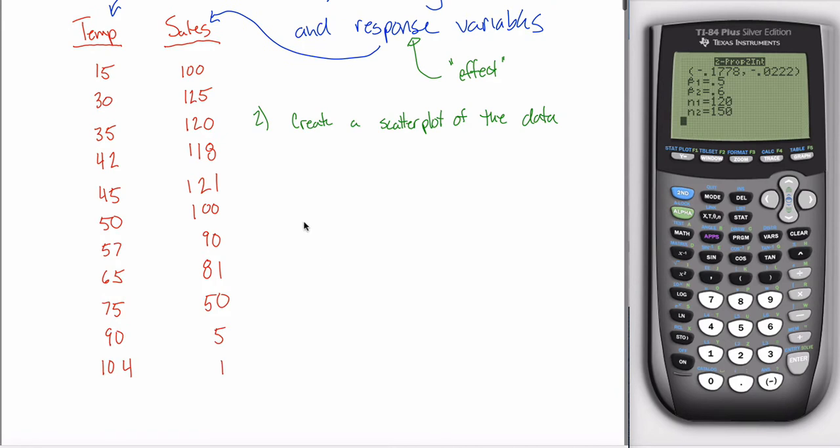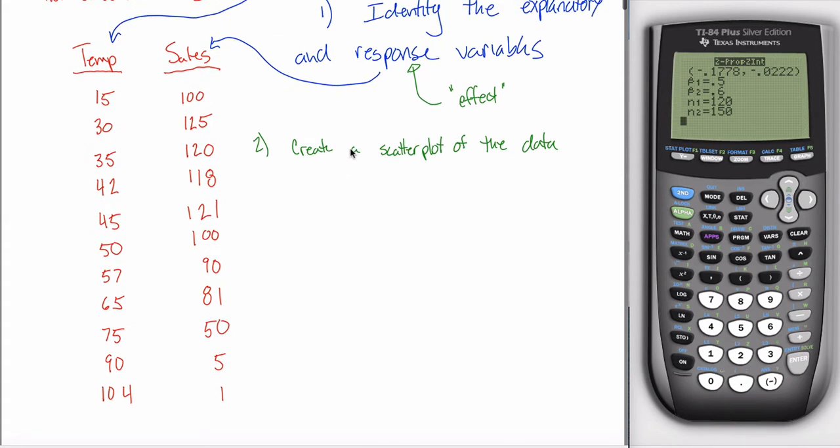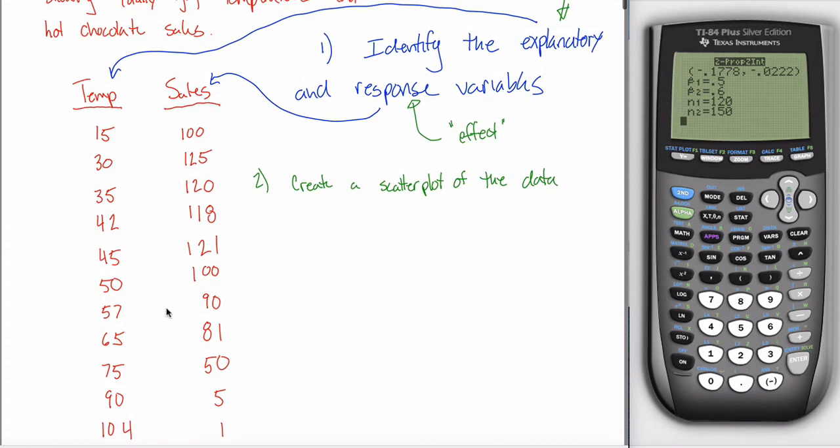So what I want to do is start to study that correlation. Well, in this specific contrived example, you might be able to just look at it and be like, oh yeah, the sales are big when the temperature is low and the sales are low when the temperature is big. It looks like one goes up, the other goes down. And that's true.